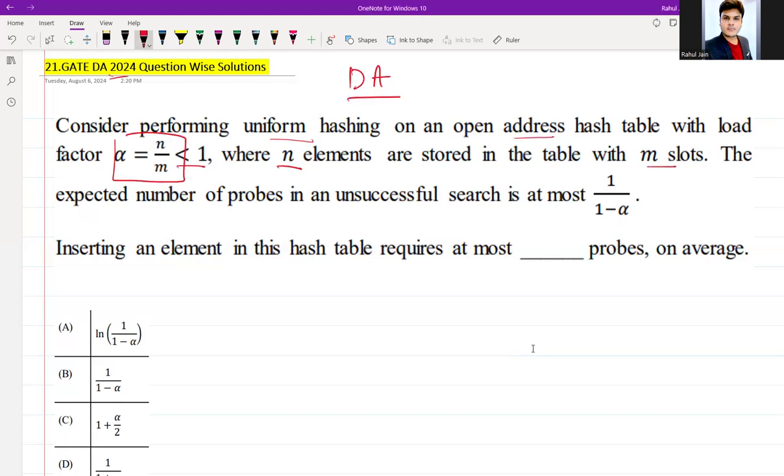The capacity or indexing has m slots, 0 to m-1 total. The expected number of probes in an unsuccessful search is at most 1/(1-α). These are the expected number of probes in an unsuccessful search.